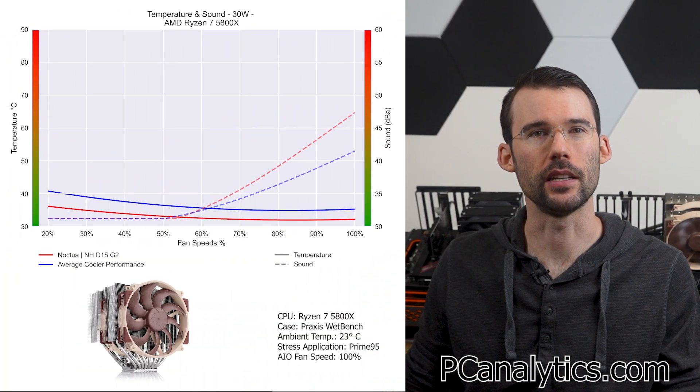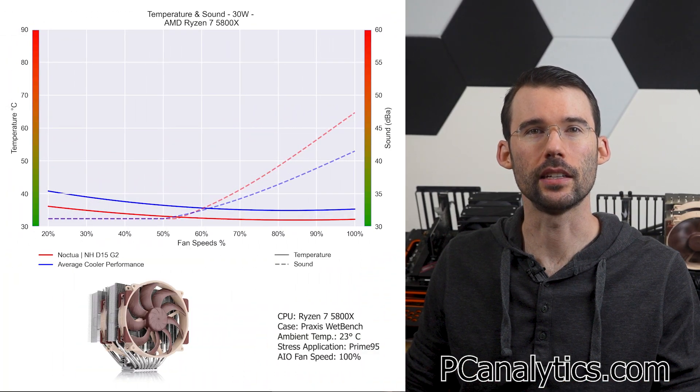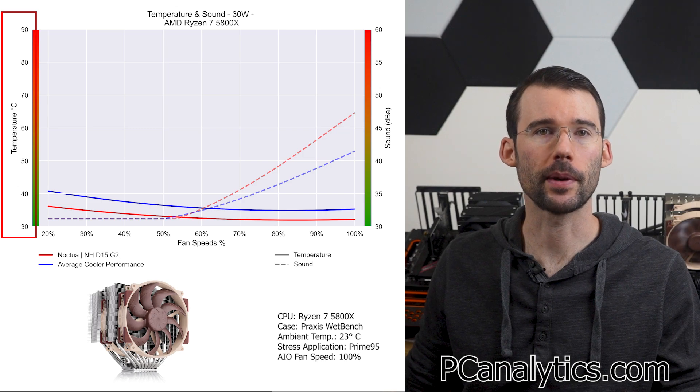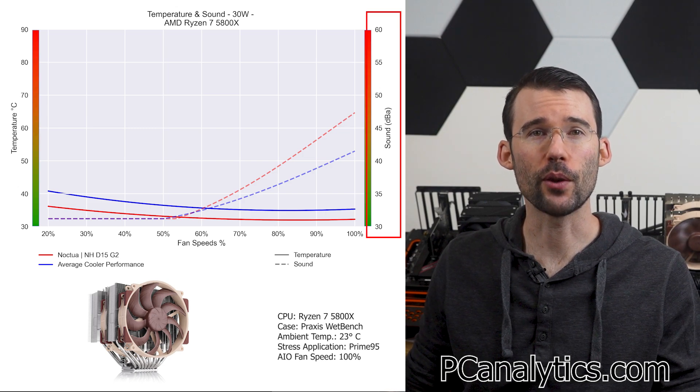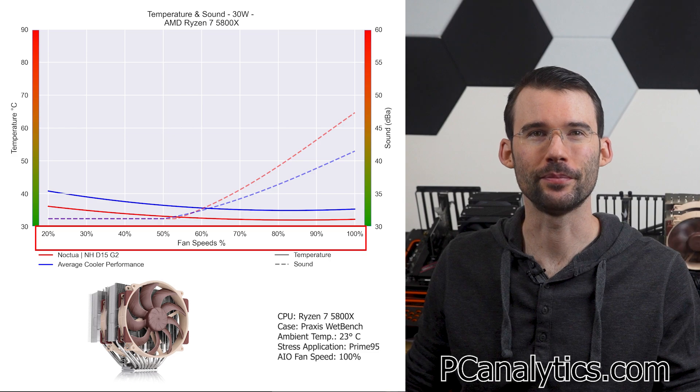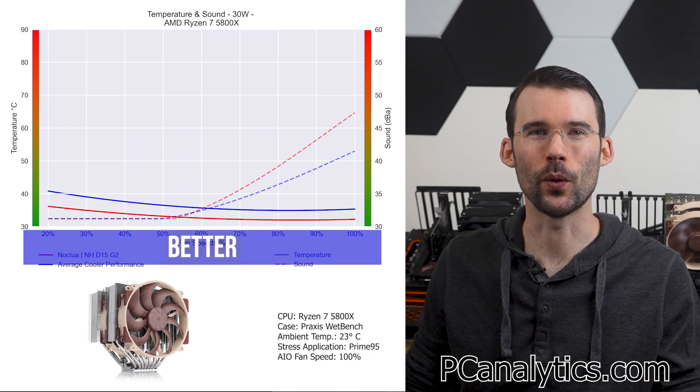In our first set of charts normalized by percent speeds, against the average of all coolers tested, we have temperatures on the left, represented by the solid line, noise on the right, represented by the dash line, and percent speeds on the bottom. For this graph, lower is always better.